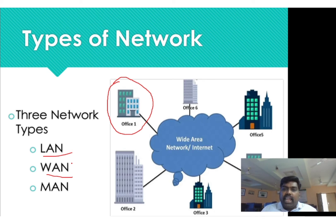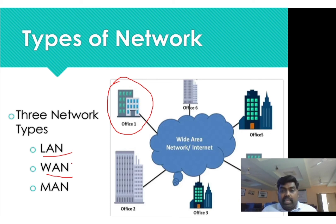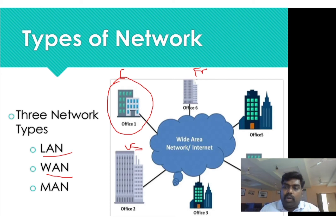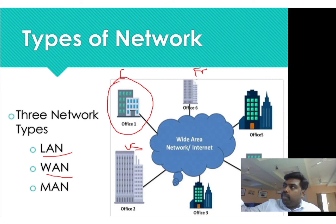For example, if a company has six different branches in different countries — United States, UK, France — you can connect all those networks. You can go to Chennai, to the US, to France, to any country on any continent, and bring them all into one network. That is called a Wide Area Network — different continents, different countries communicating through WAN.